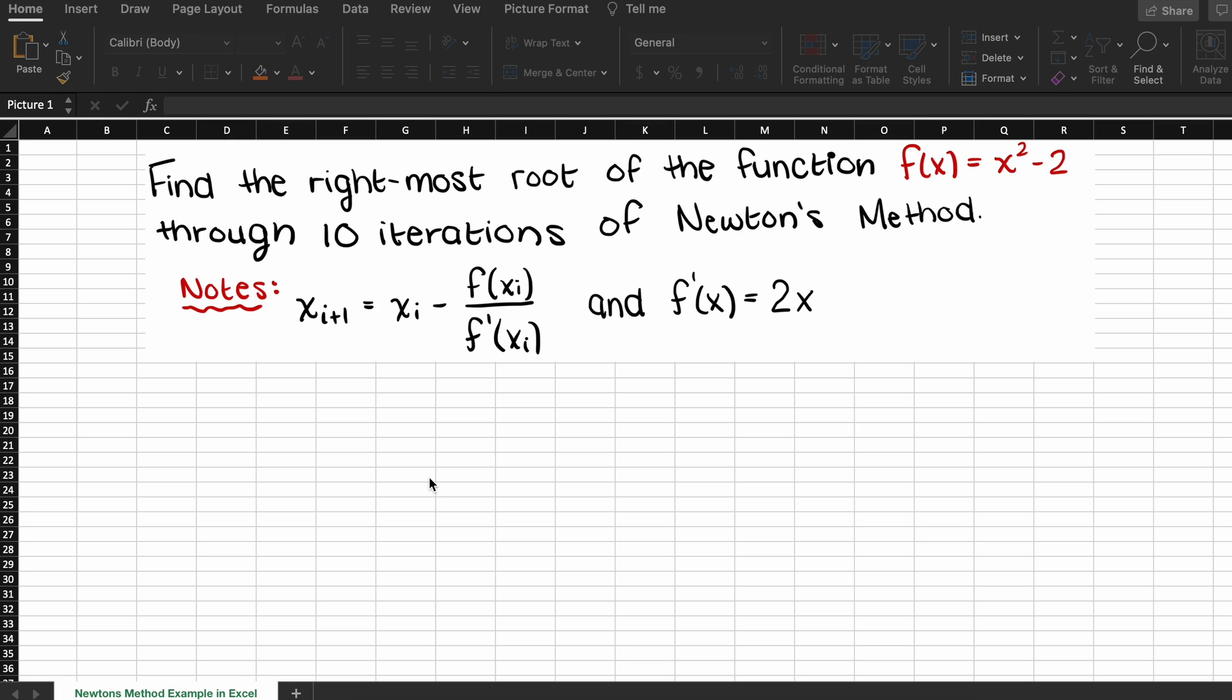Alright, so we are told to solve for the rightmost root of this function here, f of x is equal to x squared minus 2, through 10 iterations of Newton's method.